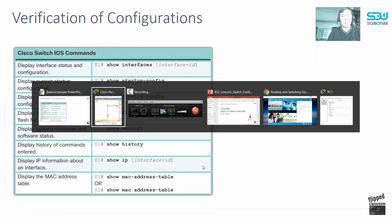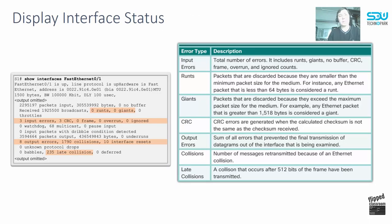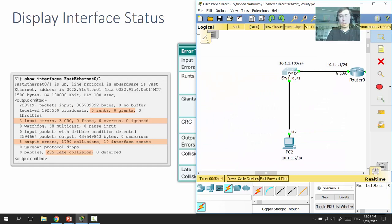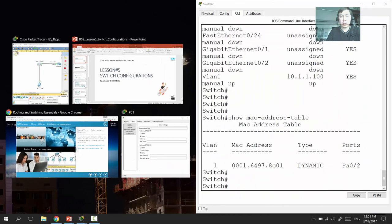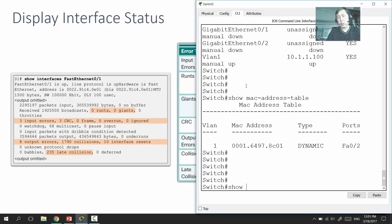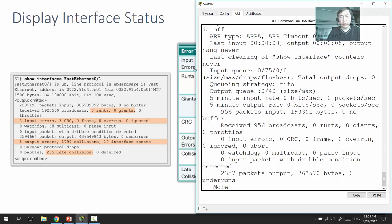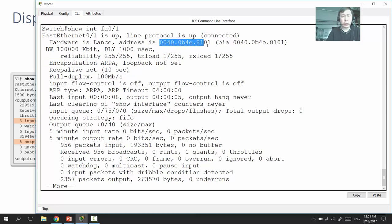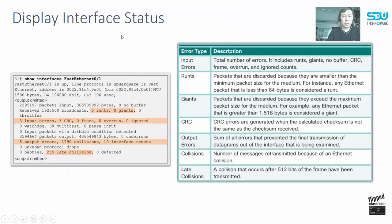If you type 'show interface fa0/1,' you see detailed output for that interface including speed, delay, reliability, duplex mode, connection status, and MAC address of the switch port. Additionally, there is error information: input errors include runts, giants, total errors, CRC values, frames, overruns, and so on.